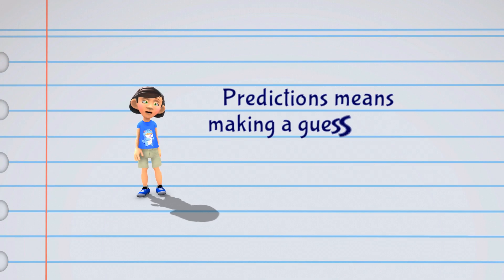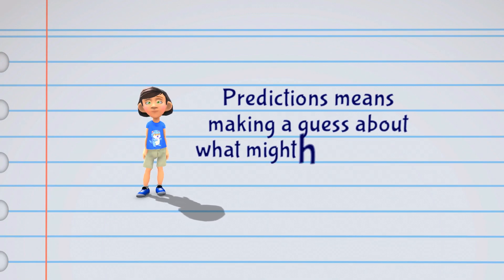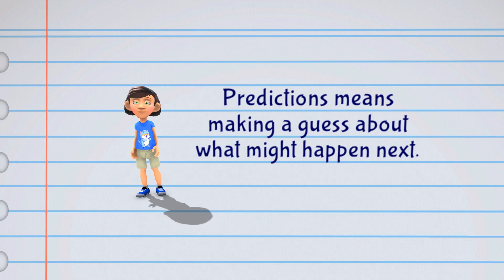Making predictions about a story means making a guess about what might happen next. When we make predictions, we are using the information we already know to make an educated guess about what might happen in the future.